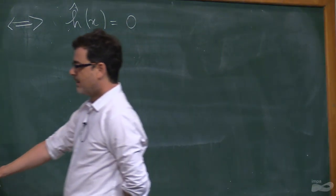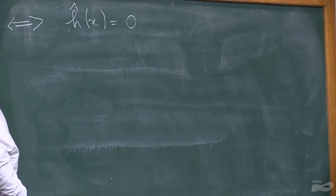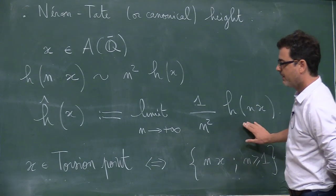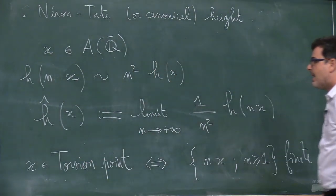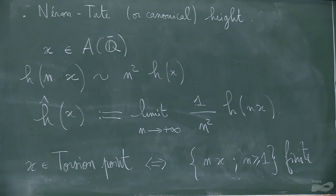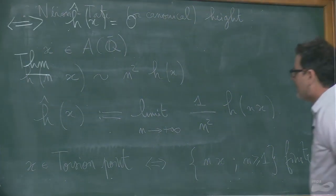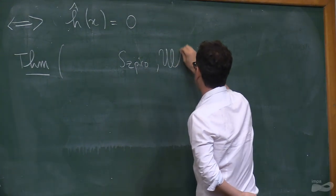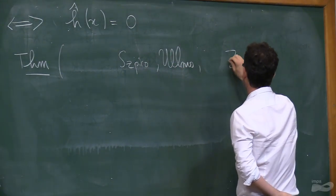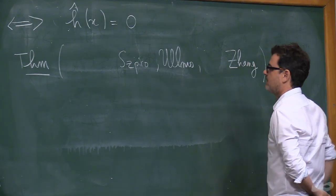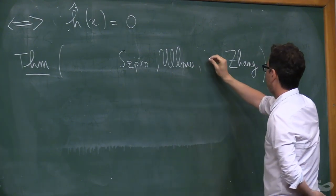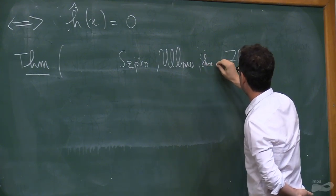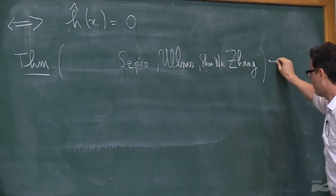We have a notion of canonical height, and now the Bogomolov conjecture is the following theorem. It was proved a little more than 20 years ago by Szpiro, Ullmo, and Zhang (Shouwu Zhang). The theorem describes subsets of an abelian variety that have many points with very small heights.